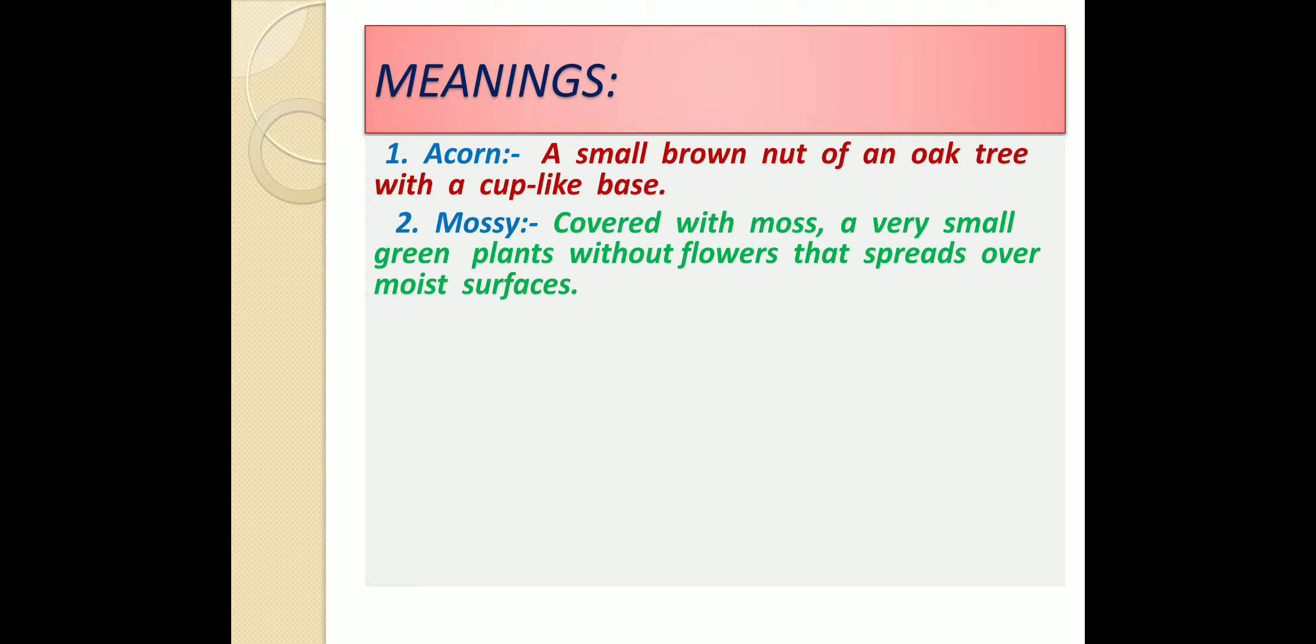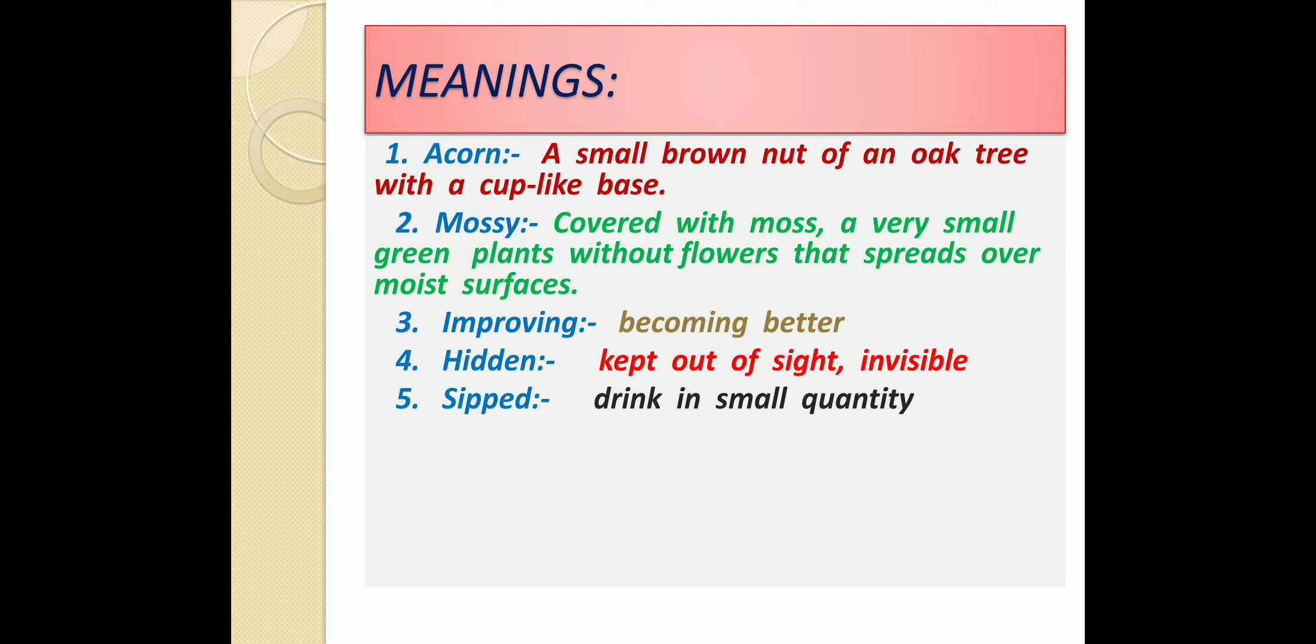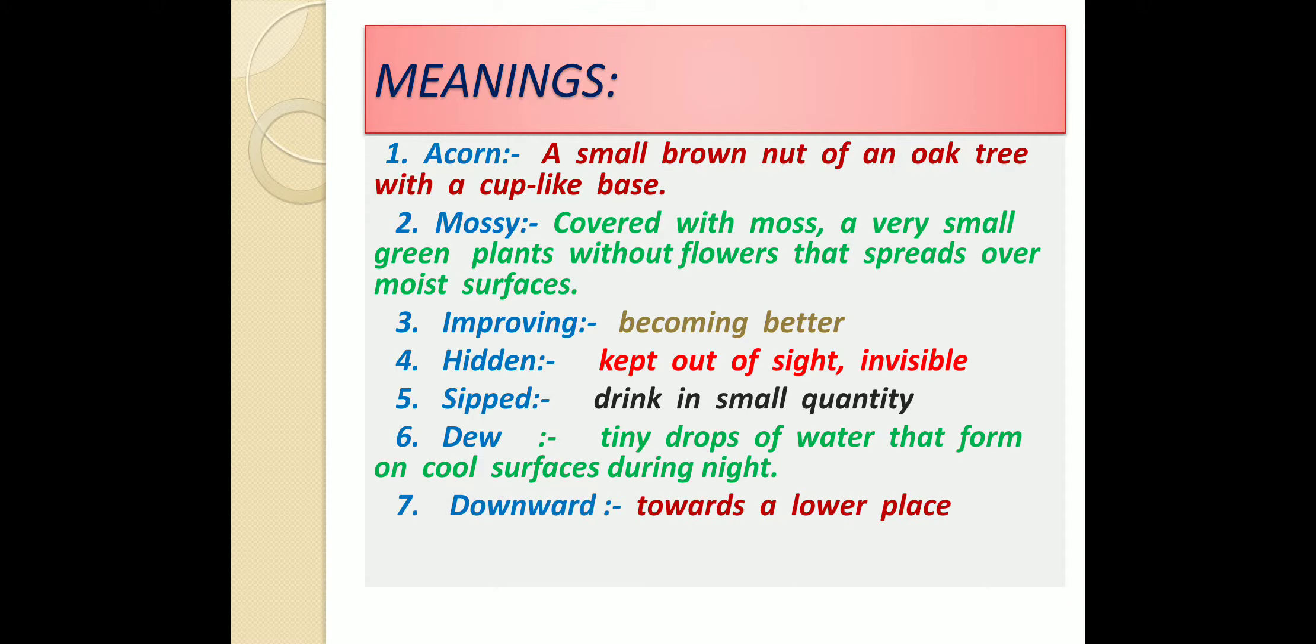Now coming to the meanings. Acorn: What is an acorn? A small brown nut of an oak tree With a cup-like base. Mossy: Covered with moss, A very small green plant without flowers That spreads over the moist surfaces. Improving: Becoming better. Hidden: Kept out of sight, Invisible. Sipped: Drink in small quantity. Dew: Tiny drops of water That form on cool surfaces during night. Downward: Towards a lower place.